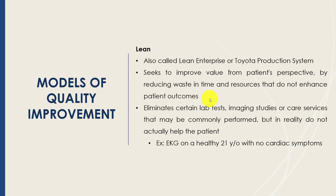Examples include decreasing the length of time a patient spends in a waiting room, reducing redundant forms a patient fills out during their hospital stay, and decreasing lab tests that add no value. For example, a healthy patient undergoing a very routine outpatient surgical procedure with no comorbidities is unlikely to need a chest X-ray or a full set of labs — these are often done reflexively but add no value in that context.